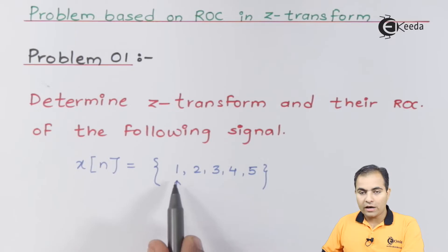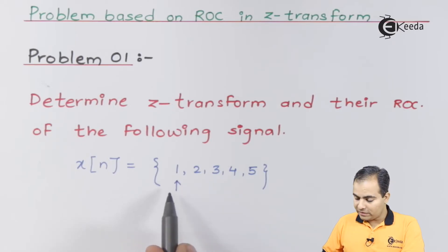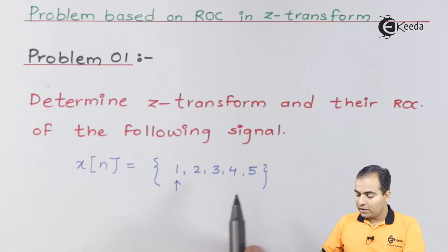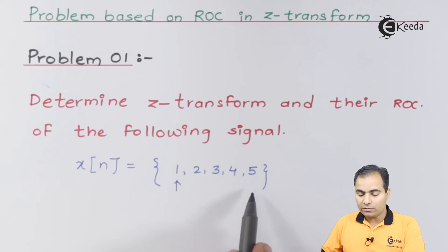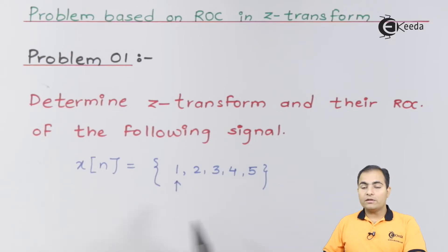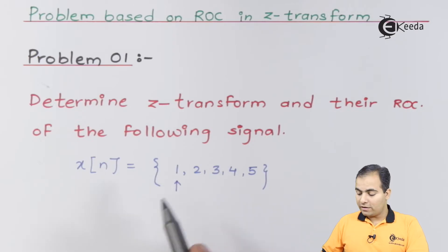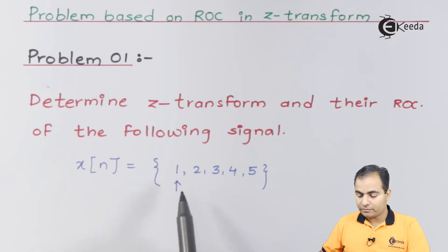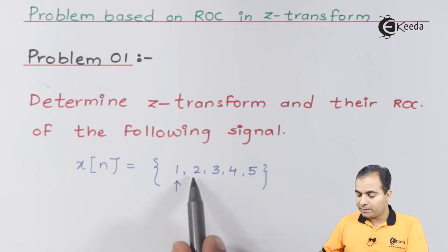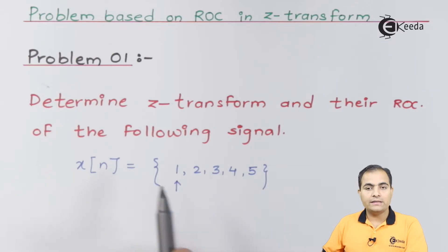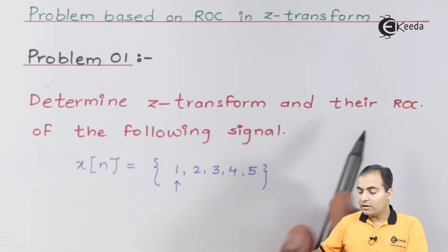The arrow gives us the idea about the location of origin. If the arrow were placed at the last sample (five), all samples would be on the left-hand side with negative instances starting from n=0, -1, -2, -3, -4. But in our question, the arrow is at the first sample, so origin is at n=0 and all positive instances are on the right-hand side. We have to find the Z-transform of this signal.